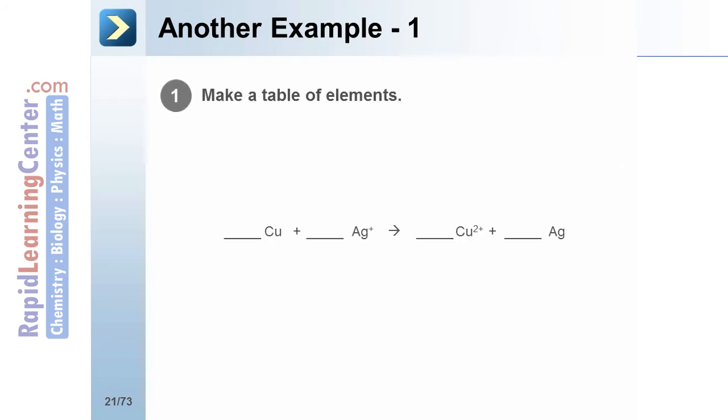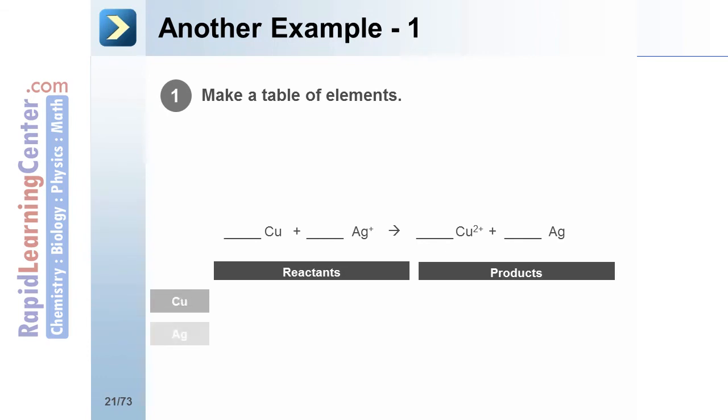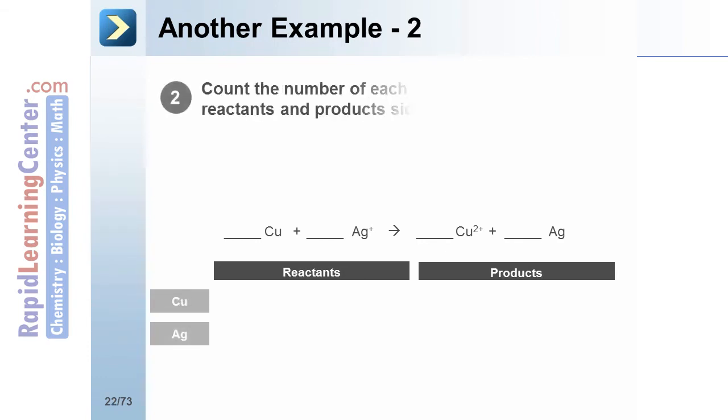A second example. First, make a table of the elements in the reaction. Second, count the number of each element on each side of the reaction. There's one copper atom on each side. There's one silver on each side.